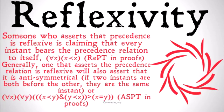Generally, to maintain a basic understanding of precedence and to make it really feel like a precedence relation, if someone construes precedence as reflexive, they're also going to assert that it's anti-symmetrical. Basically, if two instants are both before the other, they are in fact the same instant. Formally: for all x and all y, if x is before y and y is before x, that implies x equals y — x and y are the same instant. This is represented as A-S-P-T in proofs.